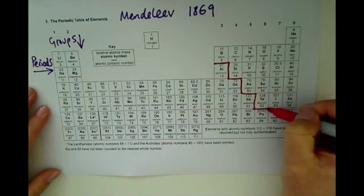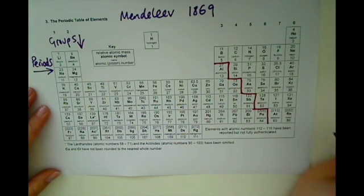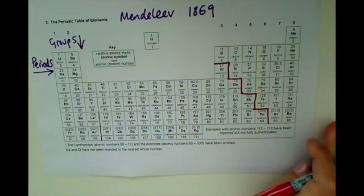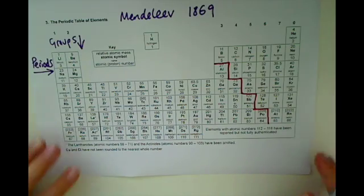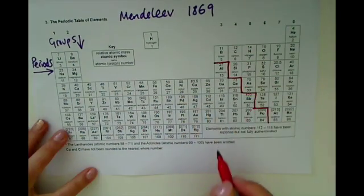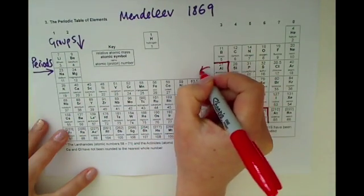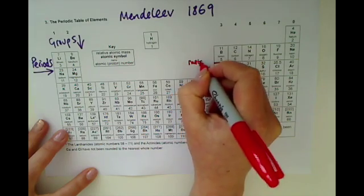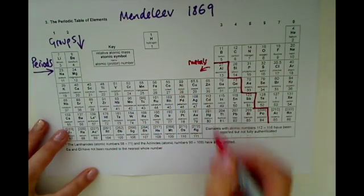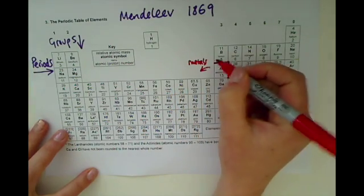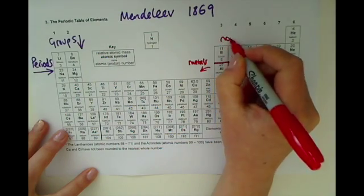So everything on the left hand side of the periodic table is a metal, so over this way we've got all the metals. And to the right hand side of the line we've got the non-metals, so over here we've got the non-metals.